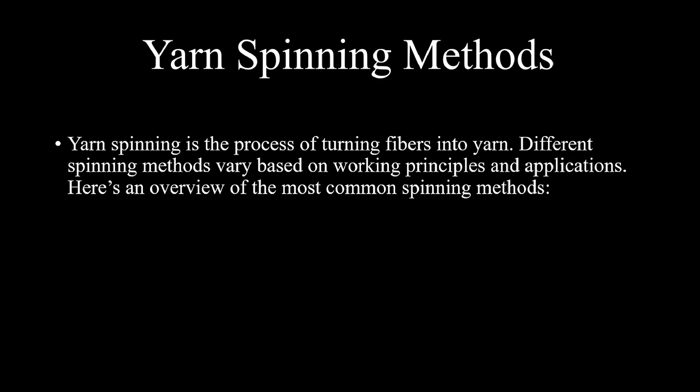Today our lecture is on yarn spinning methods. There are different spinning methods with respect to applications and working principles used in manufacturing of yarn in the textile industry. Few methods are: ring spinning, air jet spinning, open-end spinning, compact spinning, friction spinning, and electrostatic spinning. These are the different and very famous methods used in manufacturing of yarn. Here we will discuss one by one all the methods.